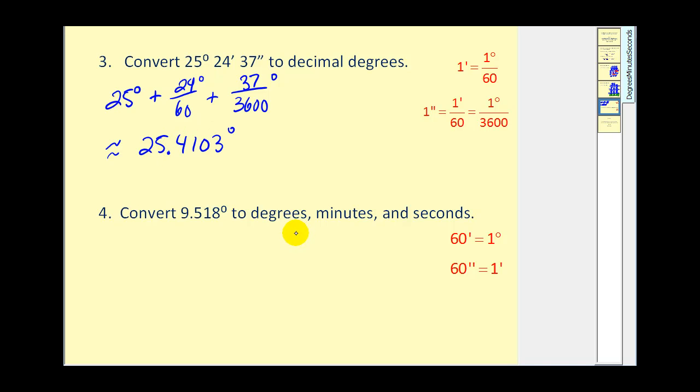Now the next problem, let's convert 9.518 degrees to degrees, minutes, and seconds.